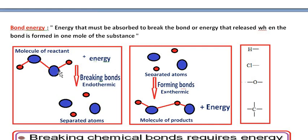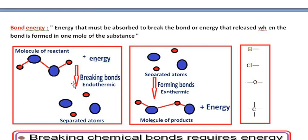For example, here are the reactants. This is a molecular reactant. Energy is needed to break the bonds between atoms. After breaking, atoms become free. So this part is endothermic because it requires energy. Breaking of bonds is an endothermic process which requires energy.